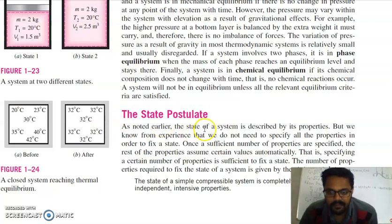As noted earlier, the state of a system is described by its properties like pressure, temperature, and volume. But we know from experience that we do not need to specify all properties in order to fix the state. We need not to specify pressure, temperature, volume, density—all the properties. We can define the state of a system with few parameters.